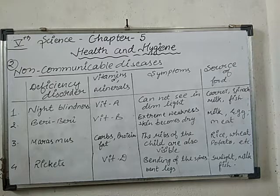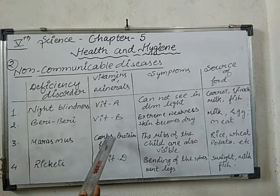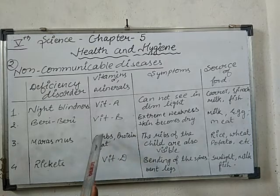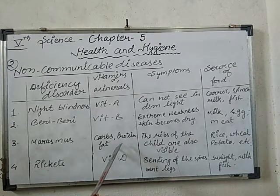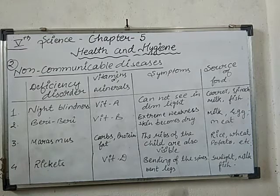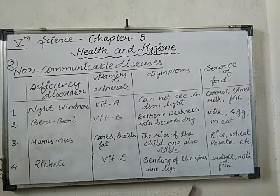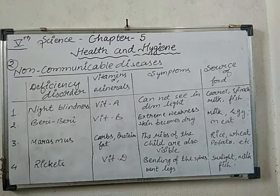The next one is marasmus. Marasmus is a disease caused by the deficiency of nutrients — carbohydrates, protein, and fat. What is the symptom? The ribs of the child become visible; the person looks very thin. To get rid of marasmus, we should intake rice, wheat, potato, maize, and honey in our diet.